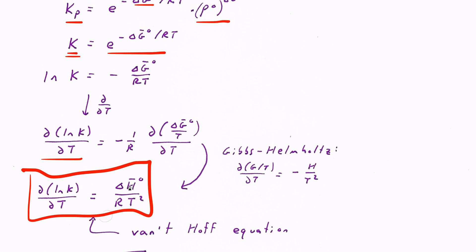Notice that what this says is the equilibrium constant depends not on ΔG per se, but on ΔH. If ΔH is positive — an endothermic reaction — the right side is positive, so the equilibrium constant increases as temperature increases. On the other hand, if ΔH is negative — an exothermic reaction that gives off heat — the right-hand side is negative and the equilibrium constant decreases as temperature increases.